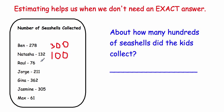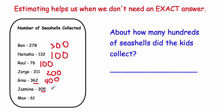Raul has 76 seashells — rounded to the nearest hundred that would be 100 because 76 is more than 50. Jorge has 211, so the closest hundred is 200. Gina has 362 — 62 is more than 50, so we round up to 400. Jasmine has 305, which is very close to 300, so we round down to 300.